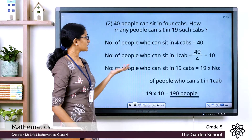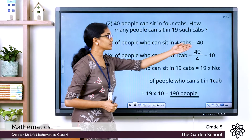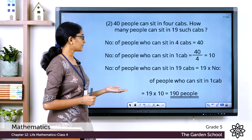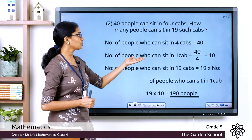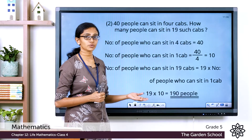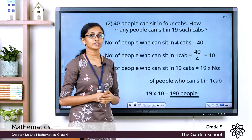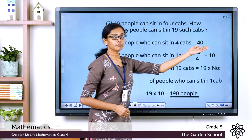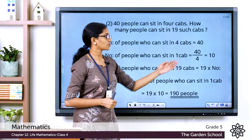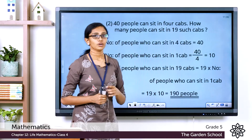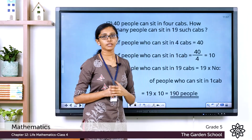Let's see the steps. The number of people who can sit in 4 caps is equal to 40 people. The number of people who can sit in 1 cap is equal to 40 divided by 4 — the total number divided by the number of units — so 40 by 4 is equal to 10. In 1 cap, 10 people can be seated.